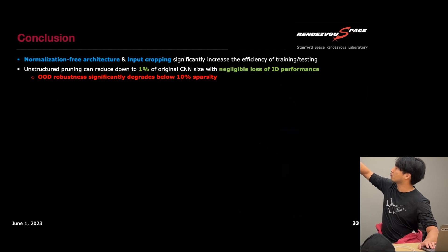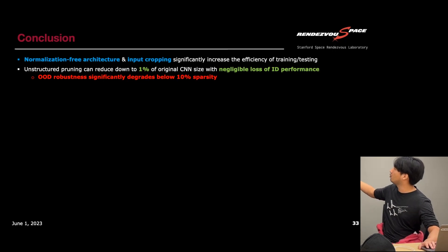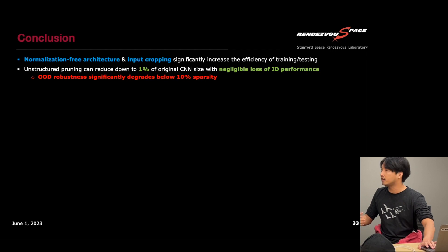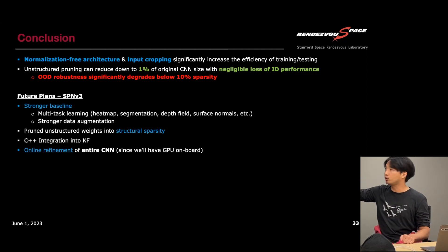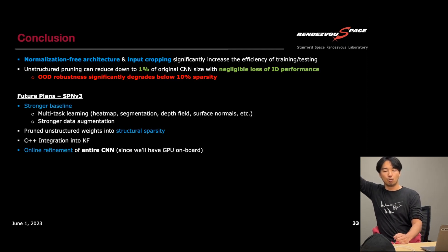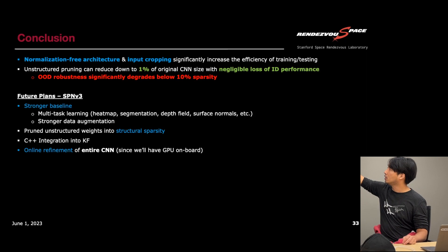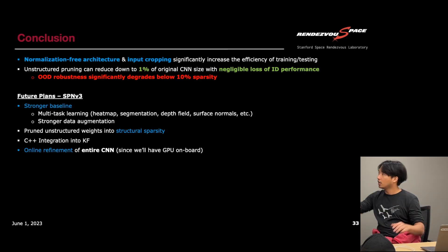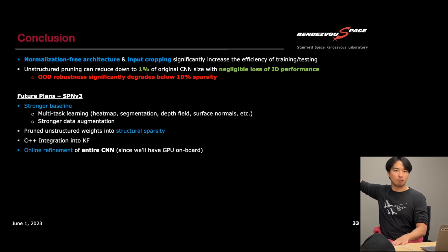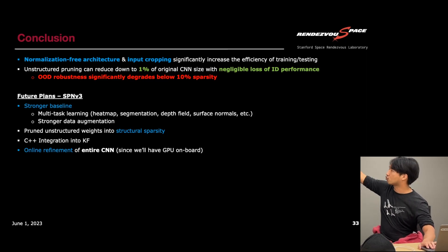In conclusion: normalization-free architecture and input cropping are both promising. Unstructured pruning doesn't immediately decrease memory footprint but gives a clear picture of how far we can prune. For future plans, we need a stronger baseline — from lessons learned in SPMv2 we want to include more relevant tasks such as binary segmentation, depth field prediction, and surface normal prediction, all of which we can readily extract from our Unreal Engine simulator but could not do with OpenGL before. Stronger data augmentation is also planned.